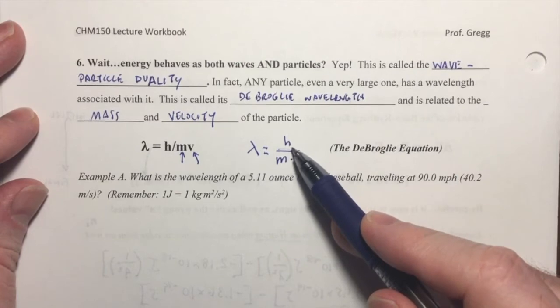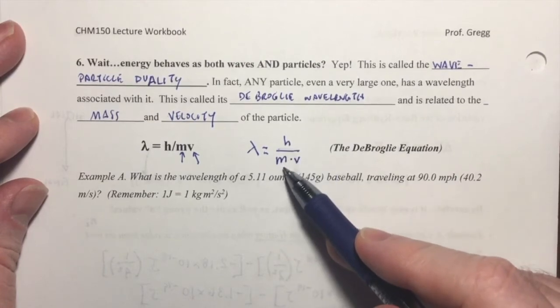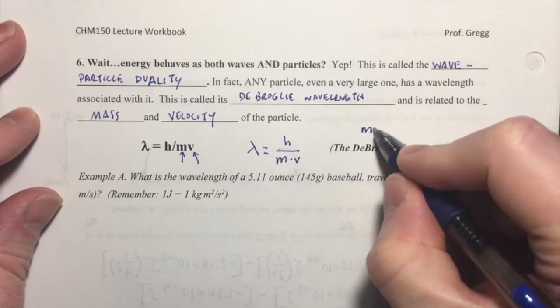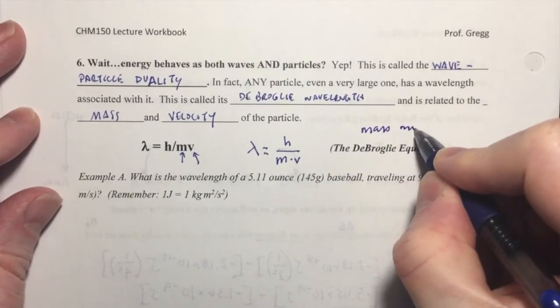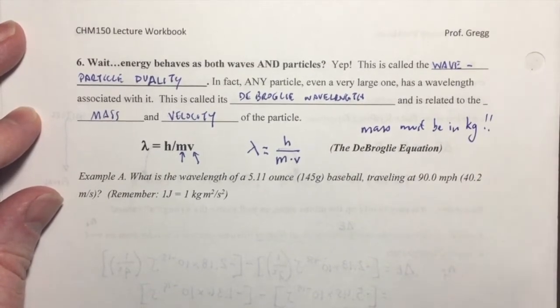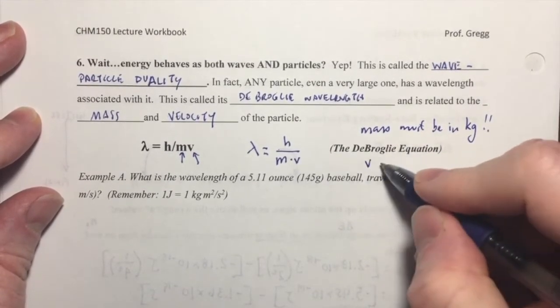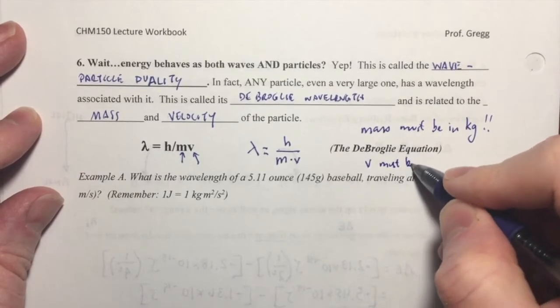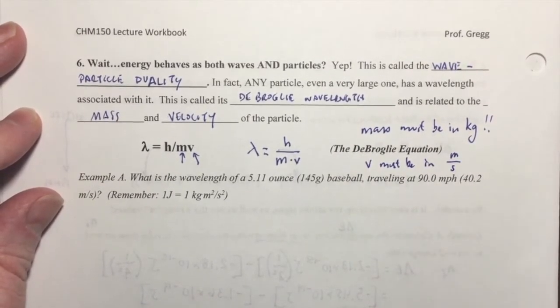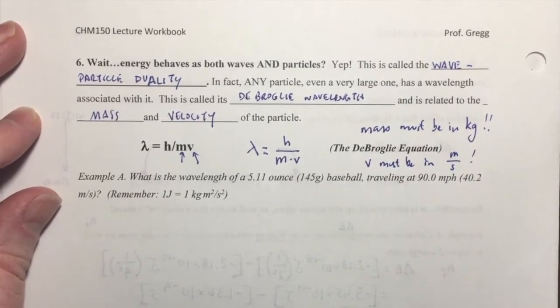And you may remember from way back a week or two ago, when we talked about the unit of mass in a joule are kilograms. So the mass must be in kilograms. And the velocity must be in meters per second. Okay? So make those two notes here.